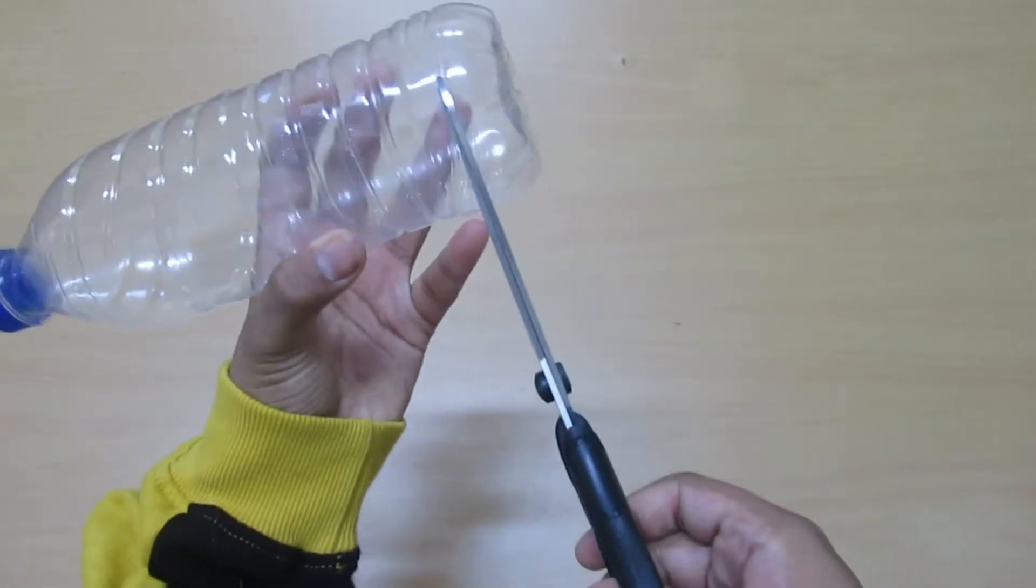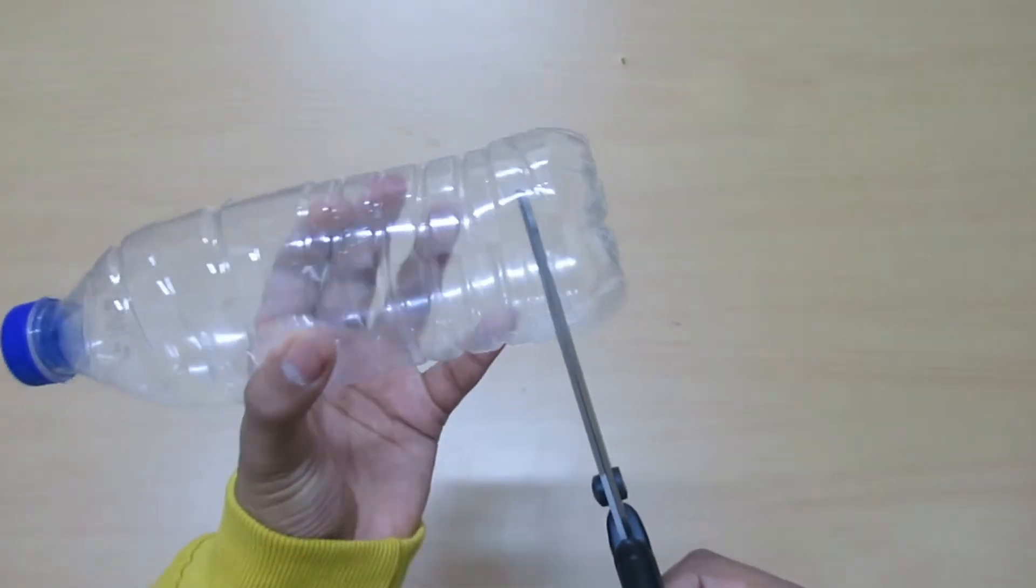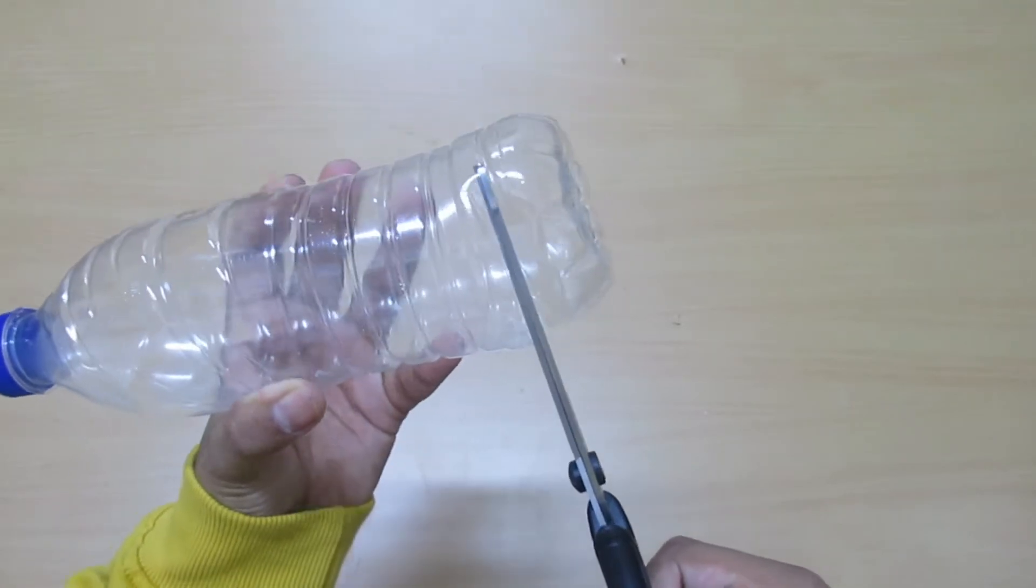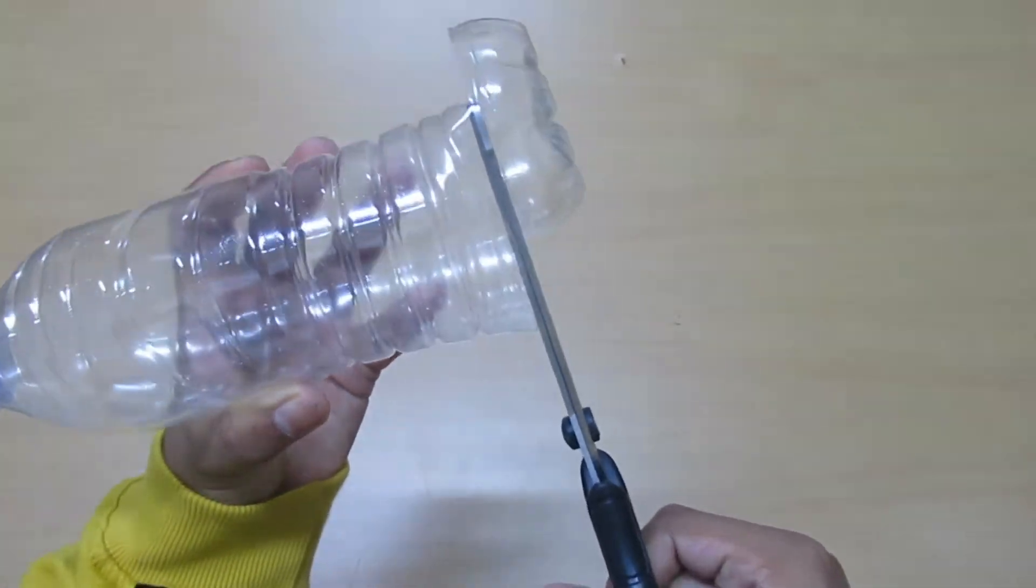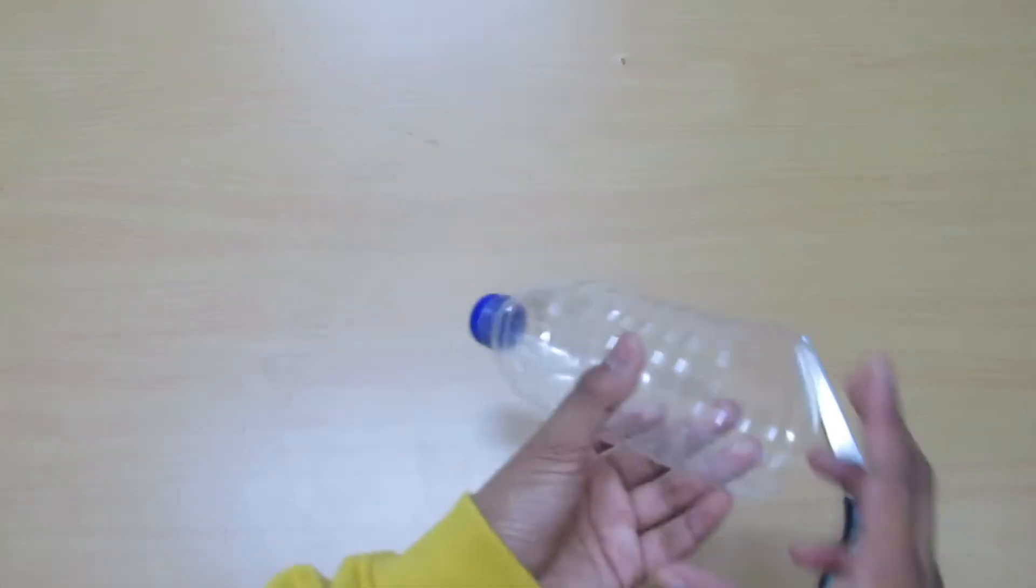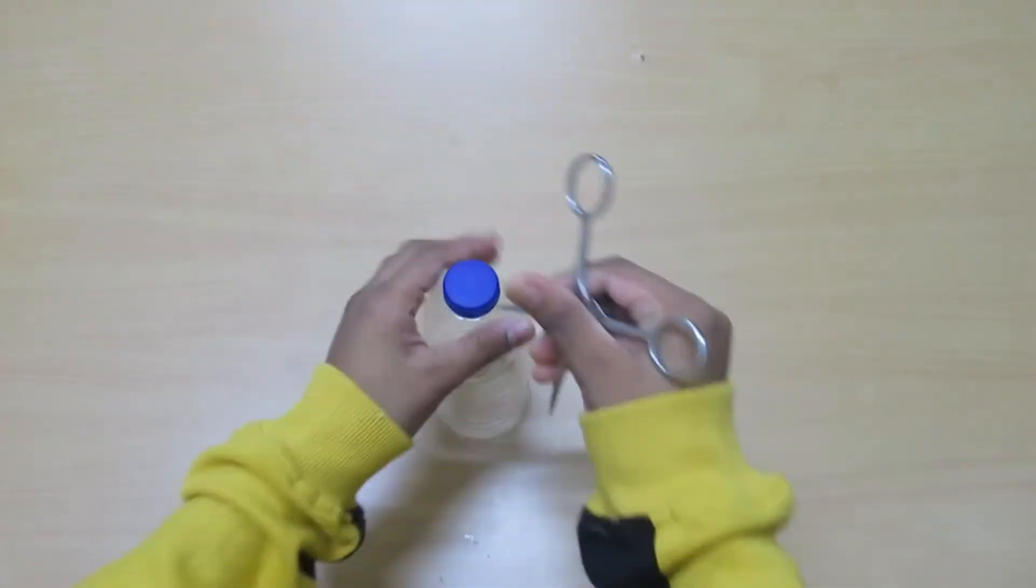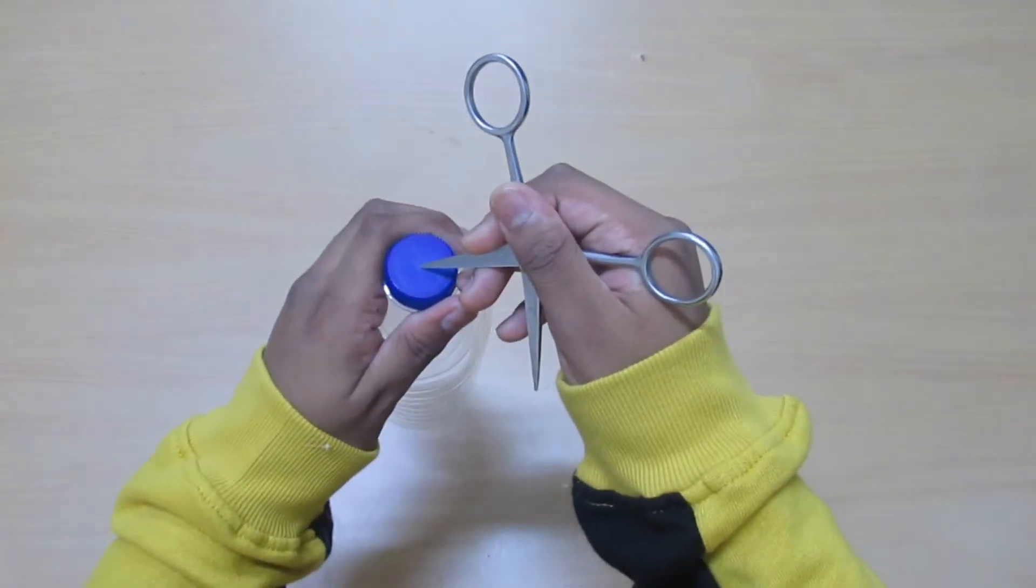Now take the bottle and cut the bottom part of it. Now take scissors and make a hole in the cap.